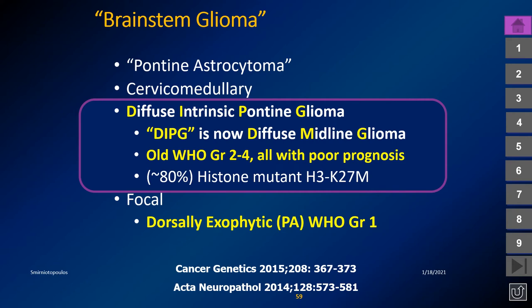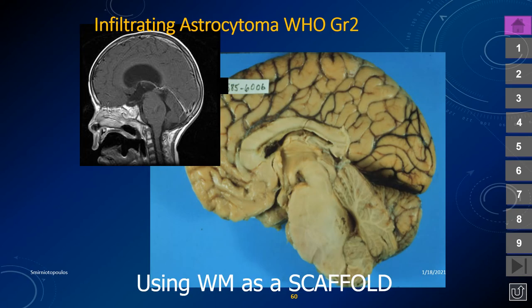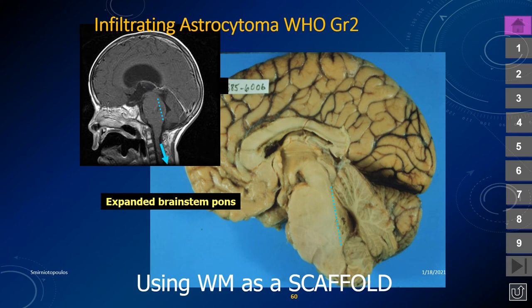Brain stem gliomas are primarily in the pons but can also involve the cervical medullary junction. The vast majority are diffuse midline glioma with the histone mutation. There is also a focal lesion involving the brain stem — commonly a dorsally exophytic pilocytic astrocytoma, WHO grade 1, seen almost exclusively in children. In these two patients, the lesion causes diffuse expansion of the brain stem including the pons, midbrain, and medulla, with encroachment on the fourth ventricle. The lesion extends vertically because infiltrating cells follow the orientation of the corticospinal tracts.